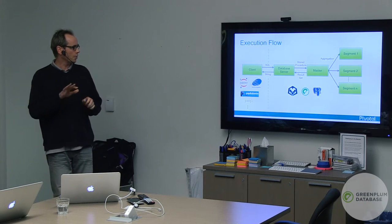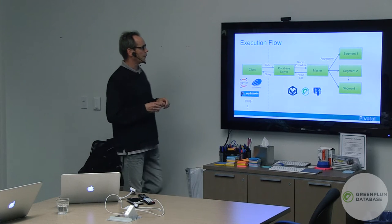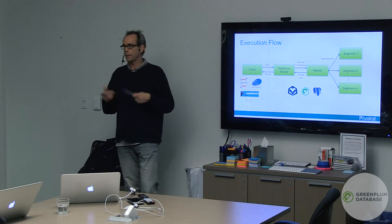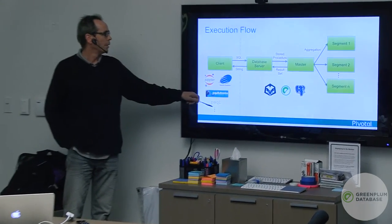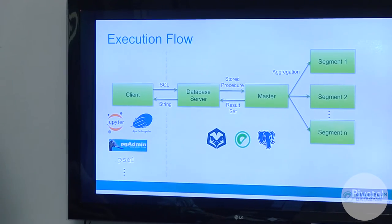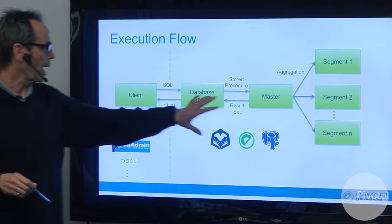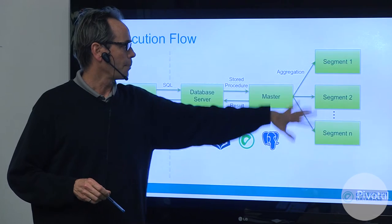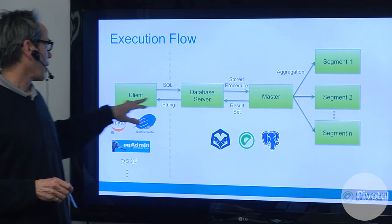Before the demo, here's a quick look at the execution flow. A client — a Jupyter notebook, Apache Zeppelin, PGAdmin, or PSQL — passes SQL to a database server. The database server calls a stored procedure on the master, and inside that stored procedure is an aggregation that's key to how machine learning algorithms are implemented across the segments. All query processing and execution happens on the worker nodes. When a result set is produced it's passed back to the client.